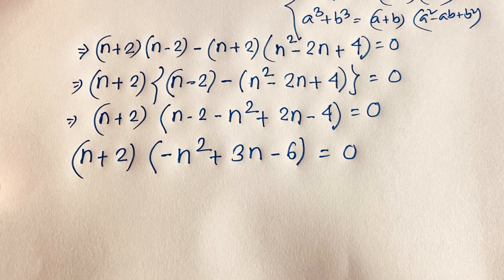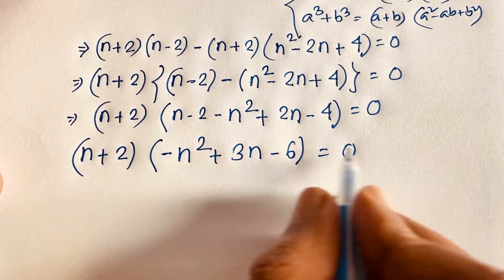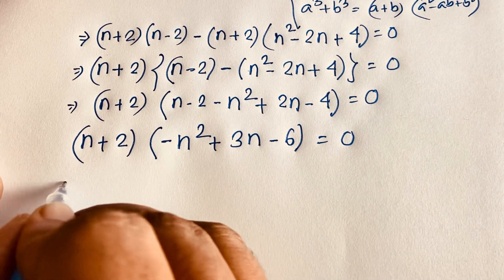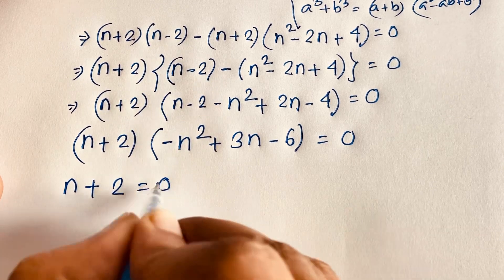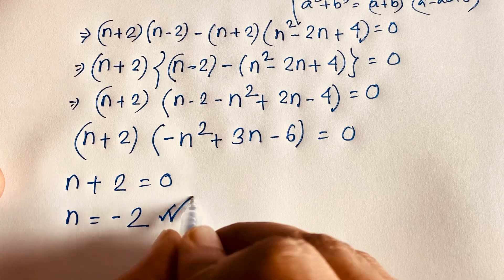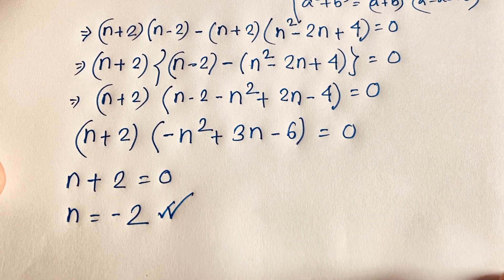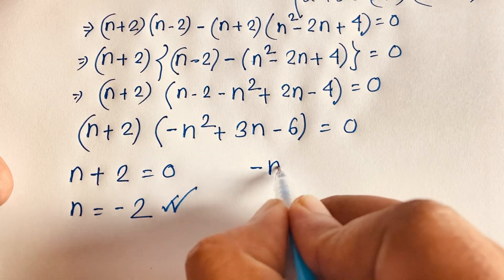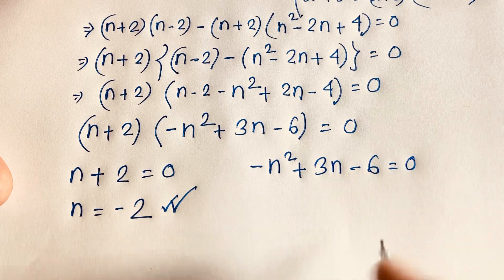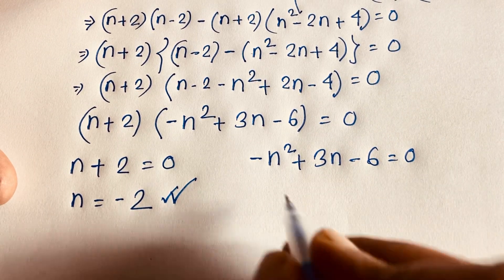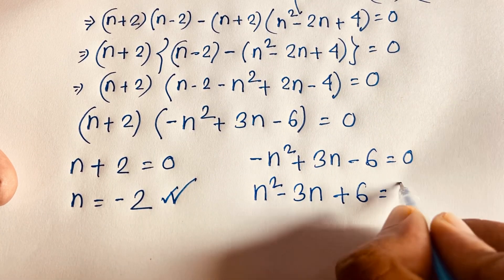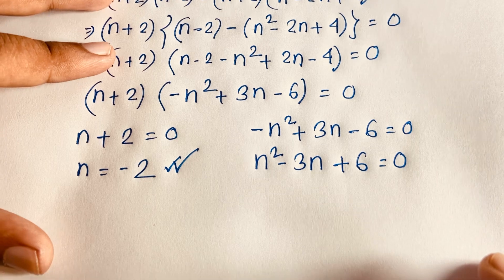We now have two cases. Case 1: n plus 2 equals 0, which gives n equals negative 2. For Case 2, we have the expression minus n squared plus 3n minus 6 equals 0. Multiplying both sides by negative 1 gives n squared minus 3n plus 6 equals 0.